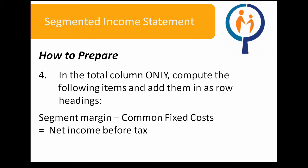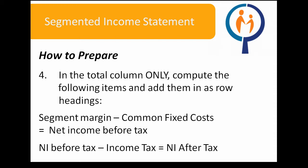By now, you should have worked your way down to the segment margin row. From there, compute the following items only in the total column. Do not compute these items for each individual segment as it relates to all segments and divisions. Segment margin minus common fixed costs equals net income before tax. Net income before tax minus income tax equals net income after tax.